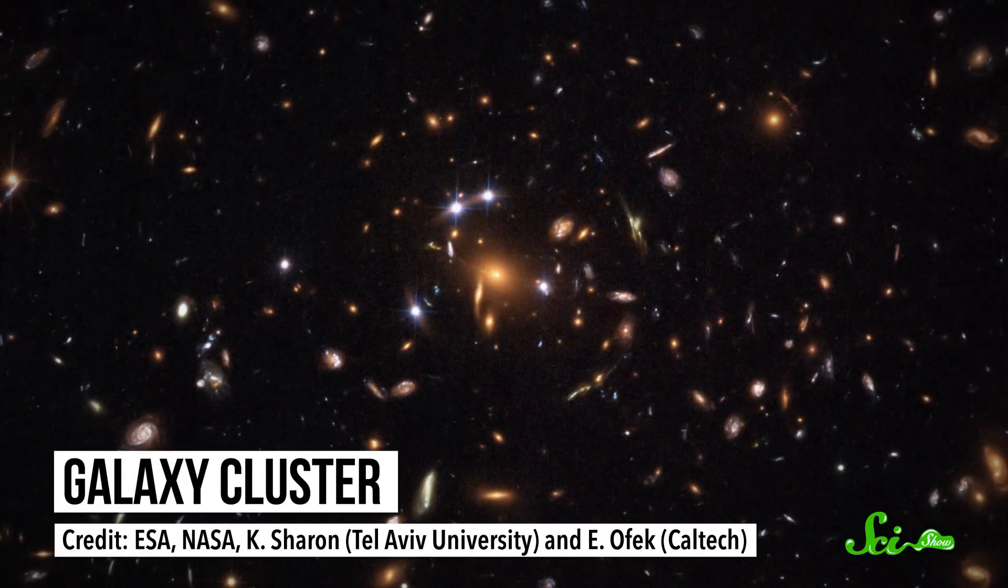But between the galaxies is another kind of superheated plasma called the intracluster medium, which can be up to 300 million degrees Celsius. We still aren't exactly sure where this medium came from, but we're starting to understand why it's so hot.